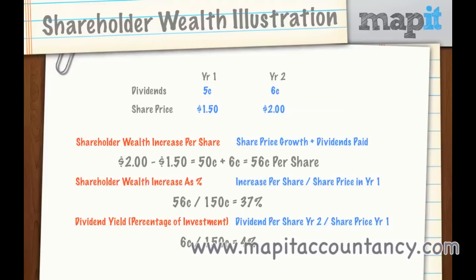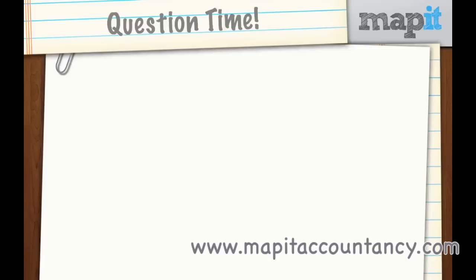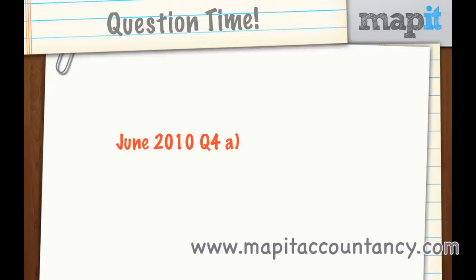Let's see how this comes up in a question. We're going to try to link all of this together. You'll need some background knowledge from the full course, but hopefully you'll have that at this point. We're going to look at June 2010, question four, part A. Pause the video now and have a go at this question. Look at the marks available and try to manage your time. At this stage we just want to get the right answer, so take your time, attempt the question, then work through the answer with me.